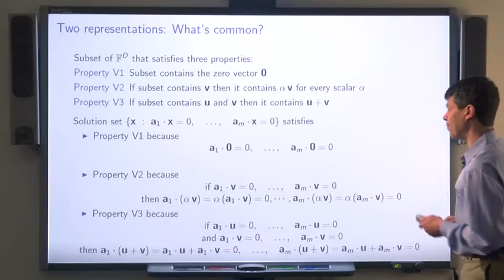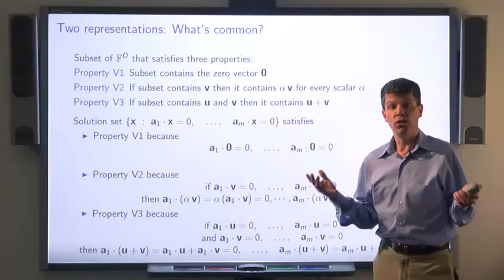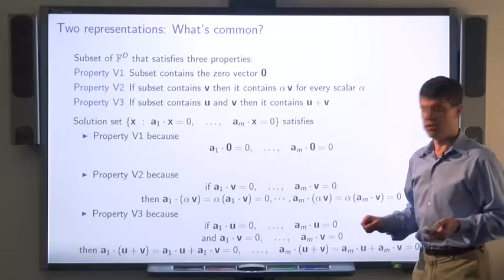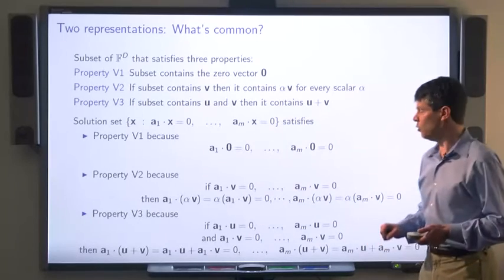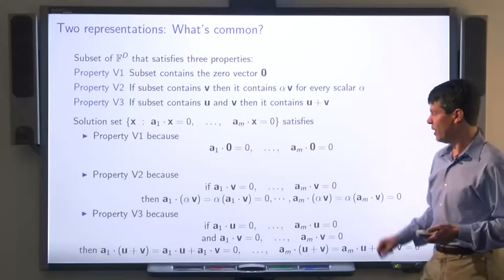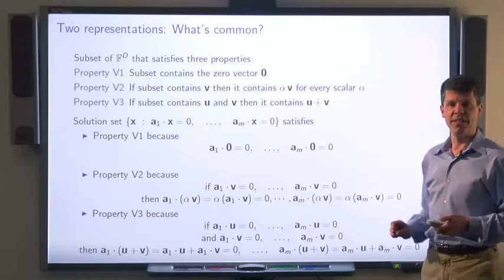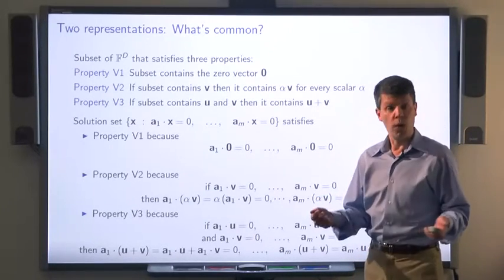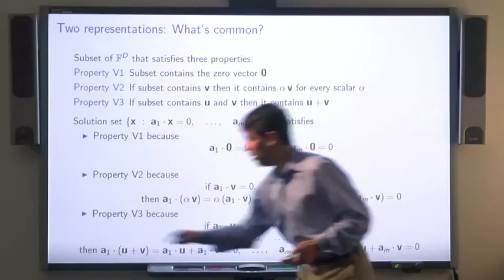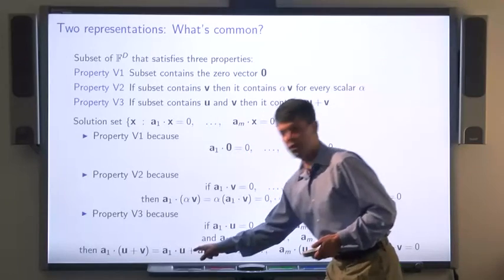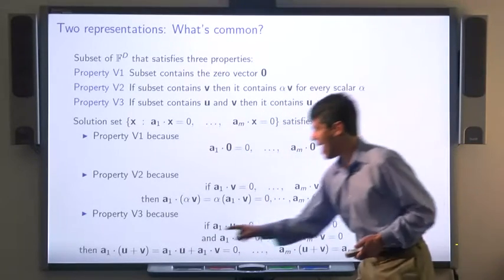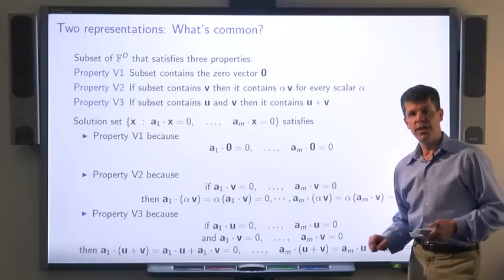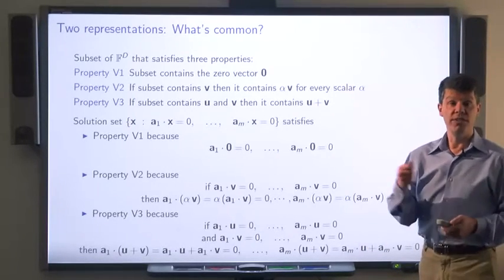For property V3: suppose two vectors u and v lie in the solution set, meaning they satisfy all the linear equations — all dot products are zero. It's easy to see that u + v also lies in the solution set. By the distributive law, a1·(u + v) equals a1·u plus a1·v, and since both are zero, their sum is also zero. So all those equations also hold for u + v.